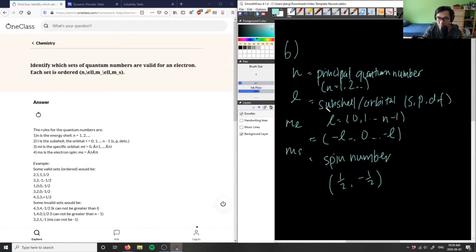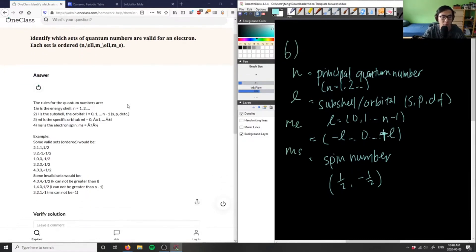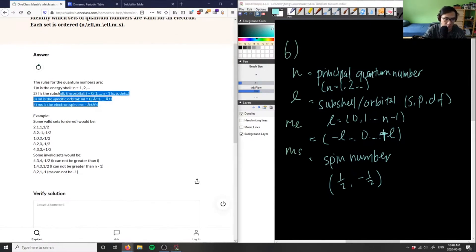So we have kind of these four guys here: your principal quantum number, we have the orbital, we have the magnetic quantum number here which is basically the number of orbitals and their orientation, so from negative l to positive l. And then we have our spin number which is half and negative half here.